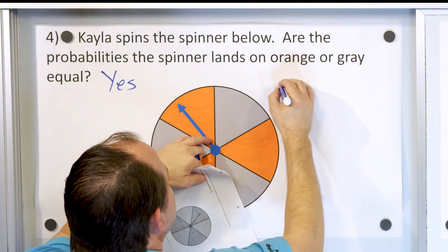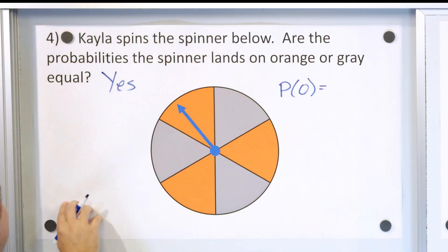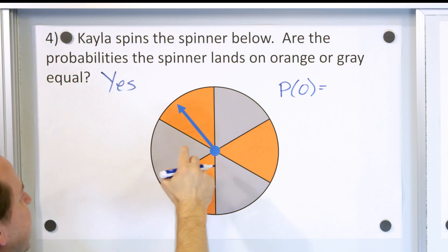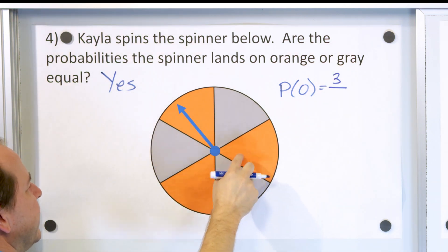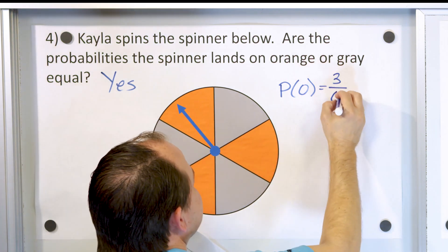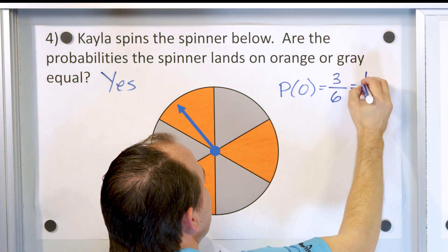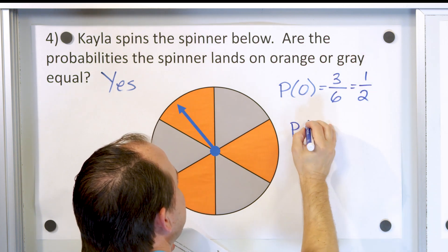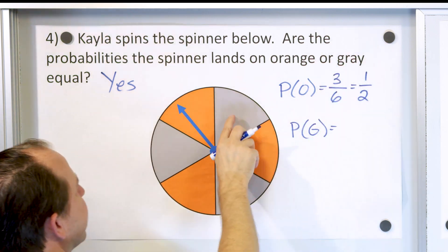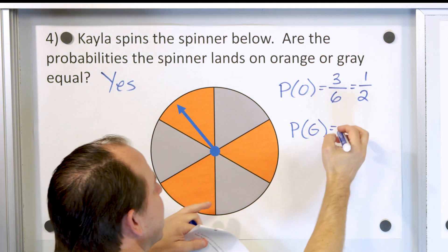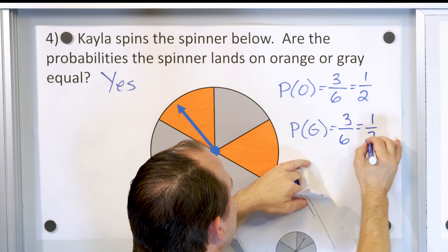The probability of landing on an orange position: there are three orange positions out of six total positions. Three-sixths reduces — divide by three — to one-half. The probability of landing on gray: there are also three gray positions out of six, which again works out to one-half.